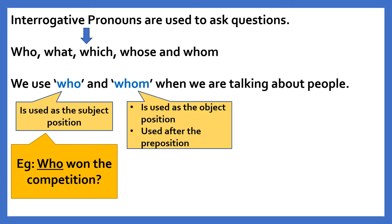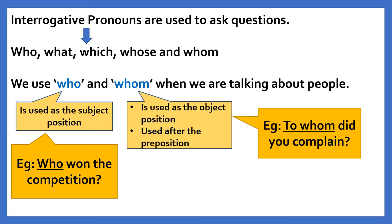Whom is used in the object position and it is used after a preposition. For example, in this sentence: To whom did you complain? Here the interrogative pronoun 'whom' comes after the preposition 'to'. Whom does not take the place of the subject — in this sentence, the subject is 'you'.